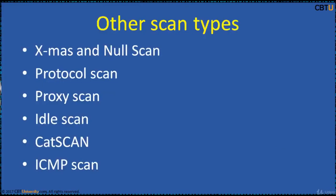There are many other scan types that exist, and Nmap supports most of them. Xmas scan sends packets with FIN, urgent, and push flags all turned on, like a Christmas tree. Null scan sends a packet with no TCP flags set. Protocol scan determines what IP protocols such as TCP and UDP are enabled on the target. Proxy scan is done to discover the proxy's IP address. Idle scan performs scanning without revealing one's own identity. CAT scan checks ports for erroneous packets. ICMP scan determines if a host responds to ICMP requests such as echo, ping, netmask, etc.